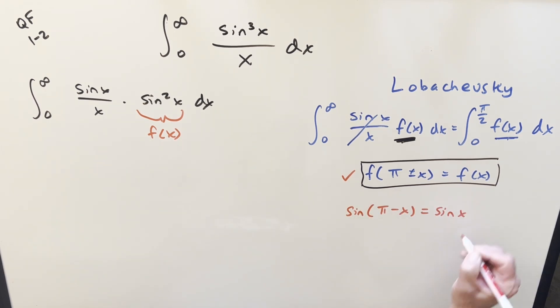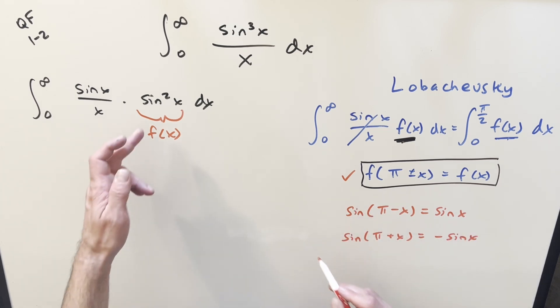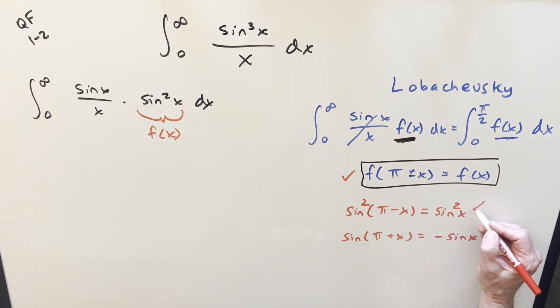And then we can also look at sine of pi plus x. This is going to be minus sine x. But the reason why it's fine is we're going to be squaring it for our function. For the case of our f of x, it's going to be squared, squared here. This right here is going to be f of x, so the first part works.